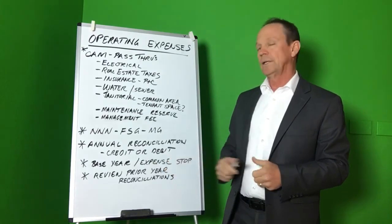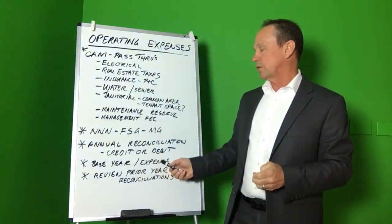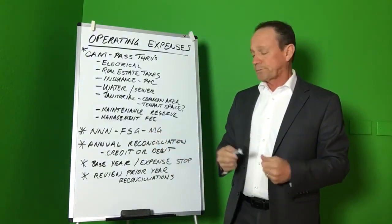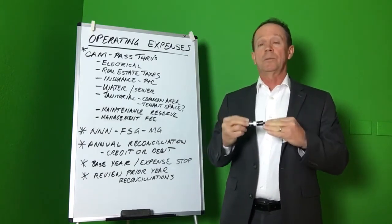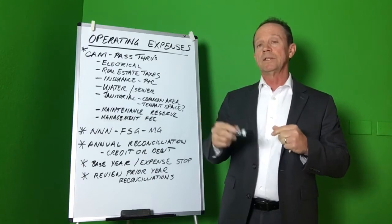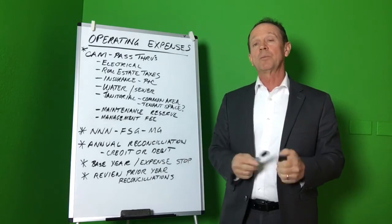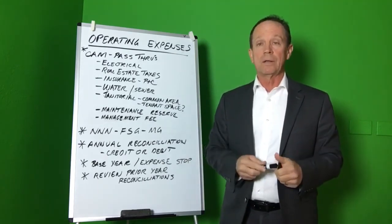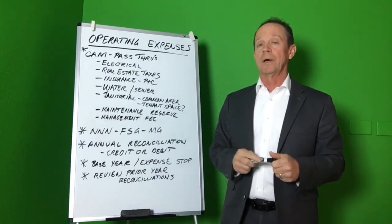The annual reconciliation can be handled either on a base year or an expense stop when it comes to the full service or modified gross lease. Meaning you have a set dollar amount stated in the lease, and if the expenses go over that, the tenant pays their pro rata share of that overage. So if they occupy 10% of the building and the overage is $1,000 for the entire project, the tenant's responsibility is $100.